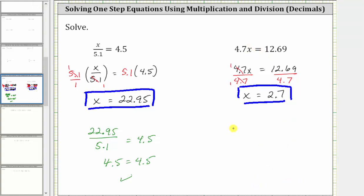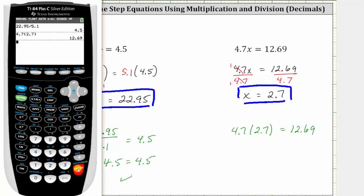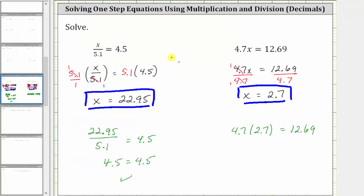Performing the substitution gives us 4.7 times 2.7 equals 12.69. And now we determine the product on the left. And notice 4.7 times 2.7 is 12.69. 12.69 equals 12.69 is true. Verifying our solution is correct.